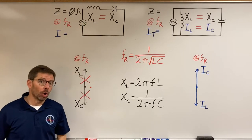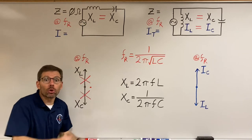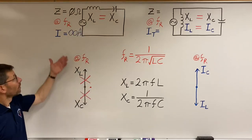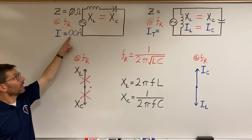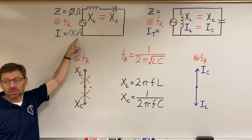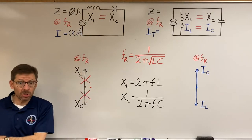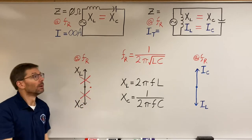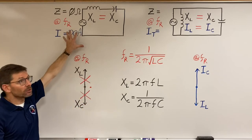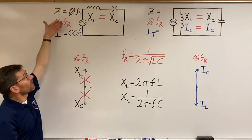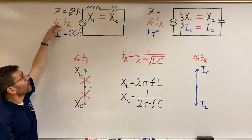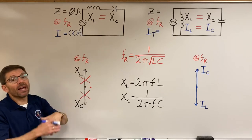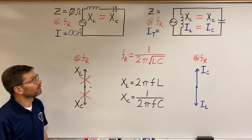So how many amps would flow with a short circuit? Theoretically, an infinite number of amps — whatever is available will flow. Again, it's a theoretical circuit, but that's what would happen at resonant frequency if there were no resistance in the circuit.